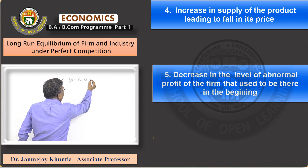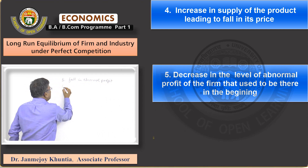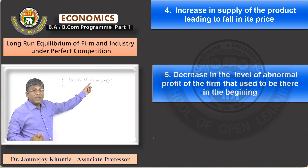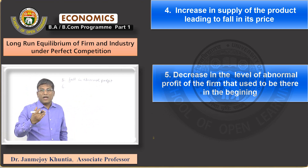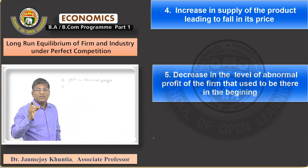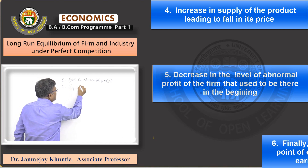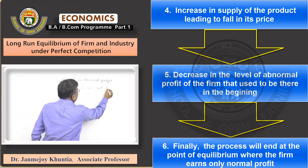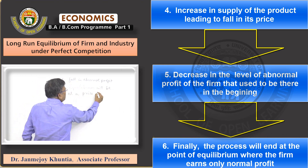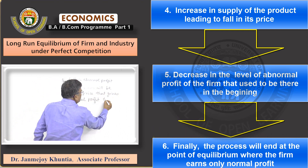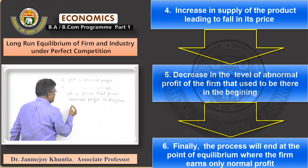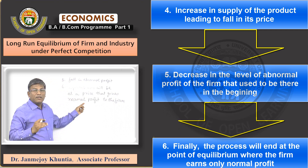Fall in abnormal profit. But as long as abnormal profit exists, new firms will keep entering and price will keep falling. In the end, equilibrium will take place when price is just enough to give the firm normal profit. So equilibrium will be at a price that gives normal profit to the firm — in the long period, the firm will earn just normal profit, even if it started with abnormal profit.